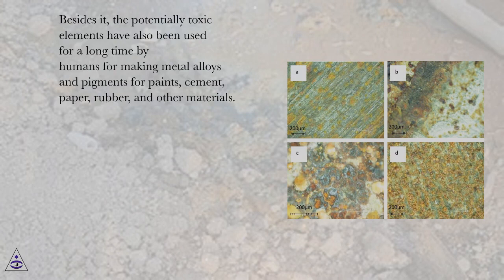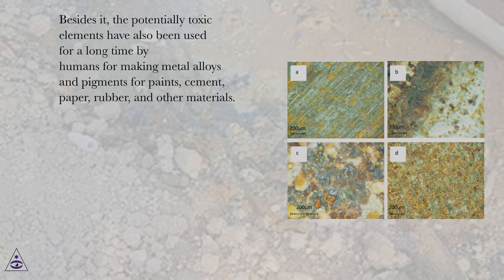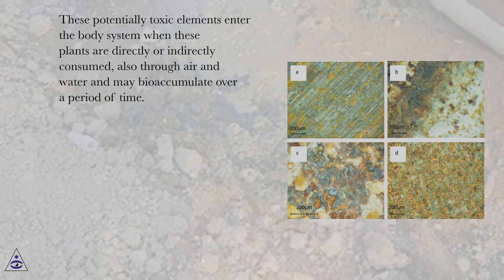Additionally, potentially toxic elements have been used for a long time by humans for making metal alloys and pigments for paints, cement, paper, rubber, and other materials. These potentially toxic elements enter the body system when plants are directly or indirectly consumed, also through air and water, and may bioaccumulate over a period of time.